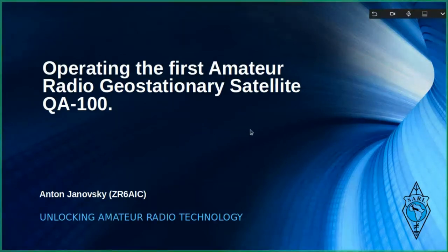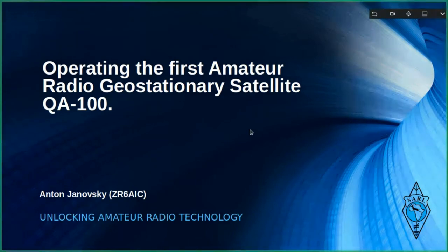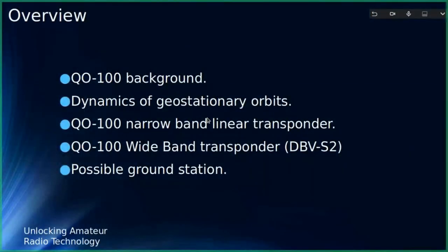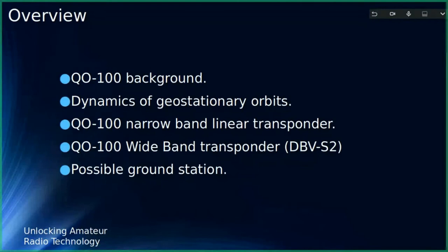I'm going to give you an overview of what can be done with OSCAR 100. First I'll take you through what the satellite is and what it can do, then we'll dive into what kind of ground station you could set up to start communicating with it. We'll cover the background, dynamics of geostationary orbits, the narrowband linear transponder, the wideband linear transponder including DVB-S2 video capabilities, and then possible ground station options.